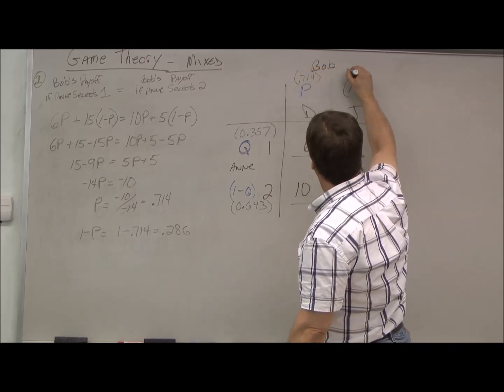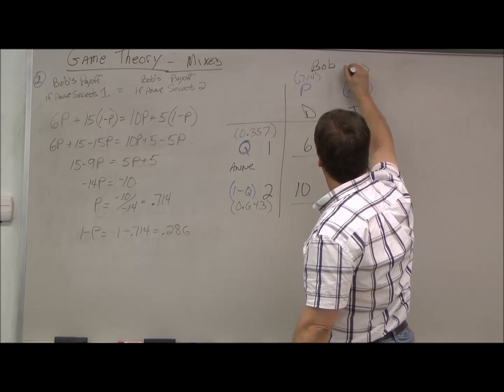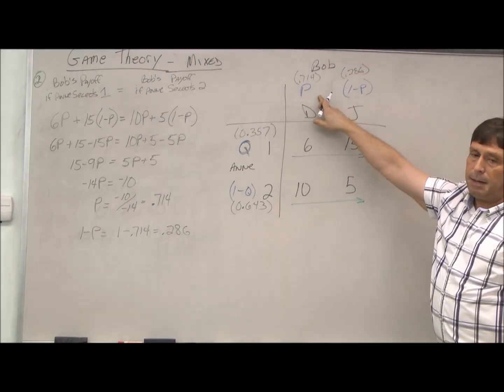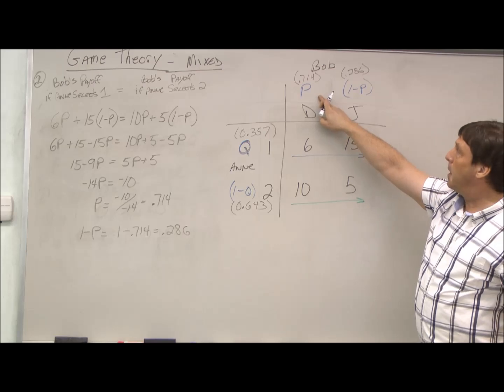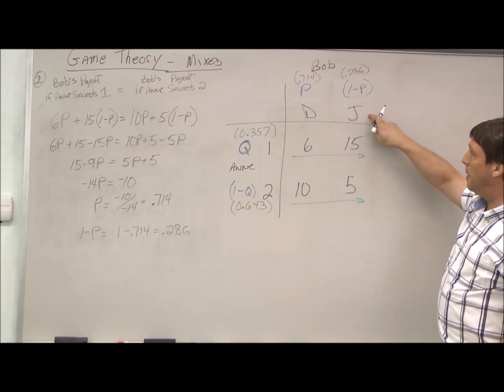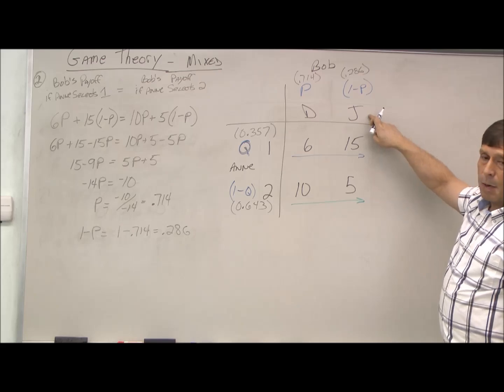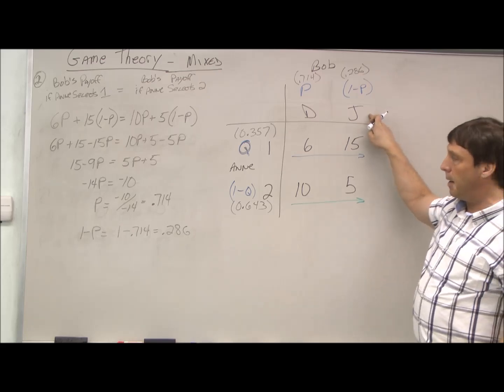So we have the two probabilities for Bob. Bob should play strategy p 71.4% of the time and he should play strategy J 28.6% of the time.